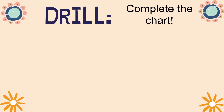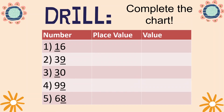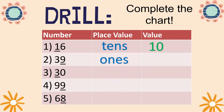Let's complete the chart and answer together. What is the place value of 1 in 16? Very good — it's tens, and the value is 10. How about the number 2? Nine ones, and the value is nine. Very good.